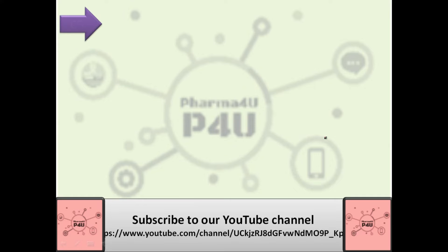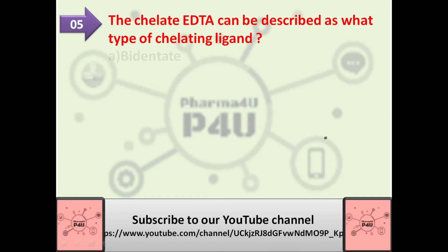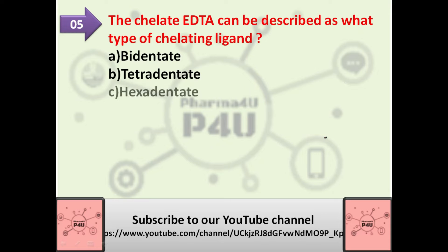The next question is: the chelate EDTA can be described as what type of chelating ligand? Option A is bidentate, option B is tetradentate, option C is hexadentate, option D is tridentate. The correct answer is that EDTA is a hexadentate ligand.